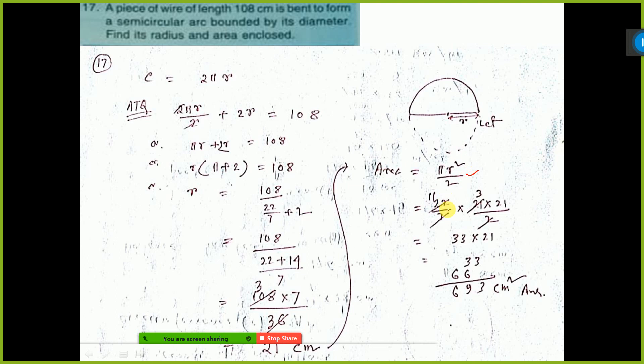Put the value π 22 by 7. r² means 21 into 21 and by 2 is there. So calculate and get answer. Thank you.